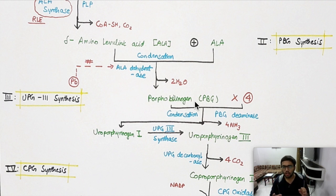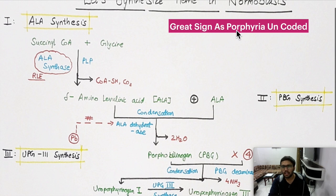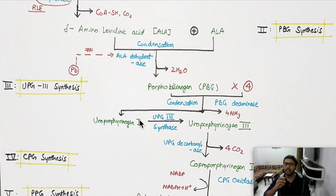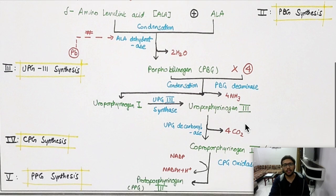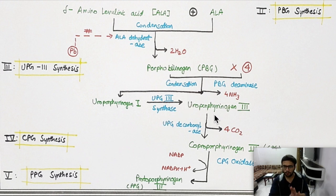Next, condense four porphobilinogen molecules. This condensation involves loss of ammonia (not water), so the enzyme is porphobilinogen deaminase. The initial product formed is uroporphyrinogen type 1, which is then converted to uroporphyrinogen type 3 by the enzyme UPG3 synthase. You can simply write uroporphyrinogen type 3.